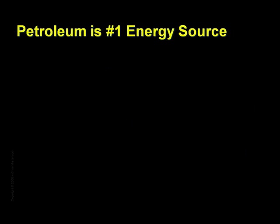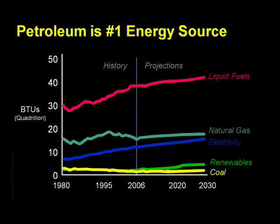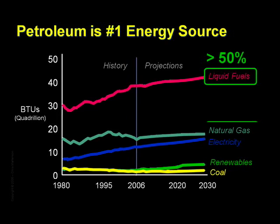When we look at US energy use, we see in this chart from the Department of Energy that oil represents over 50 percent of our total yearly energy use, while oil and natural gas together represent over 75 percent. We're going to examine oil in detail, although pretty much everything I'm about to say about oil applies equally to natural gas, so we'll be discussing more than three quarters of our total energy situation.